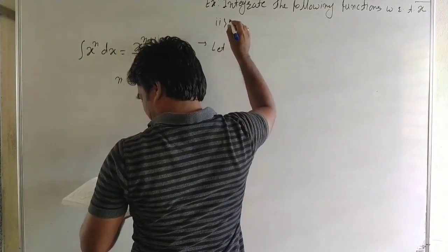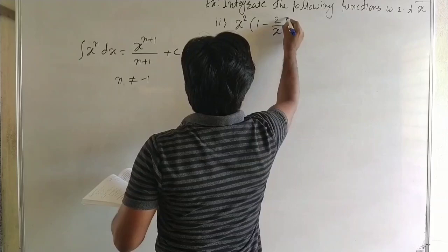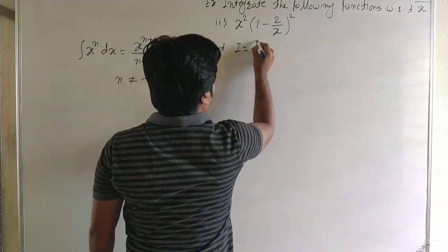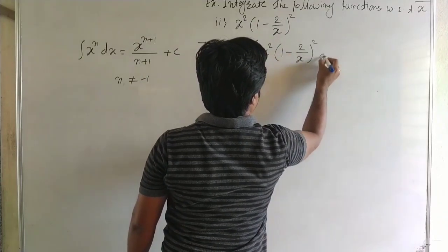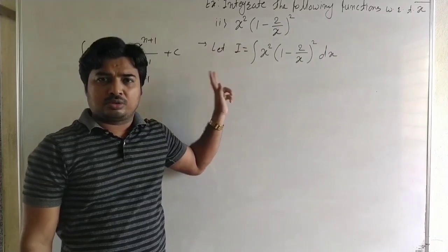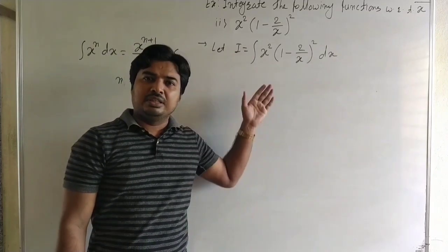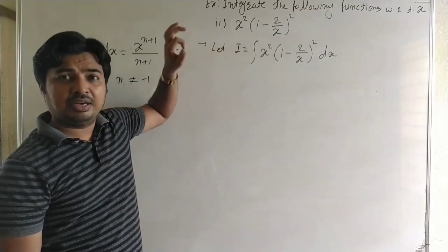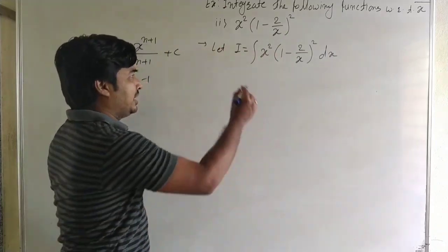Second example: integrate x²·(1 − 2/x)². Let I = integration of x²·(1 − 2/x)² dx. There are two functions in multiplication. We know only two rules of integration — addition and subtraction. Multiplication requires integration by parts, and division requires integration by partial fractions. Since we only know addition and subtraction here, we expand the expression first.